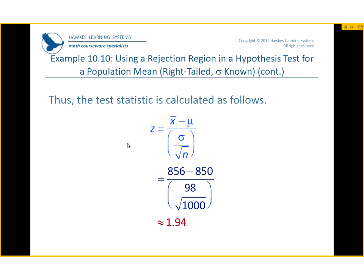Z equals the sample mean, which is 856, minus the population mean, which was 850, divided by the population standard deviation, which is 98, divided by the square root of 1,000, which was our sample size. When you do that mathematically, you get 1.94.